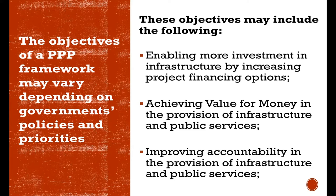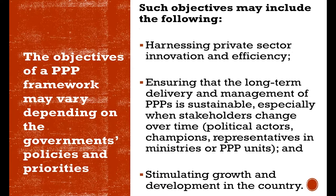Objectives include achieving value for money in the provision of infrastructure for public services, and improving accountability in provision of infrastructure. Traditional public procurement procedures are often fraught with corruption. But in a PPP process, companies try to be nimble and transparent in their operations — they are more efficient. A company as a whole operates more efficiently; it might have one or two staff acting strangely, but as a whole its operations are more efficient.